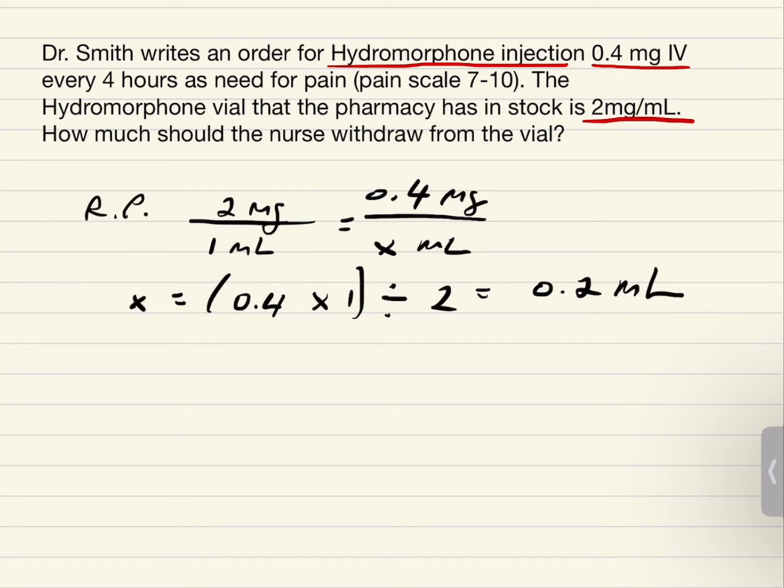Let's do this as a dimensional analysis as well. We're going to use 0.4 mg over 1. That's the dose that we're looking for, times multiplied by 1 ml over 2 mg.